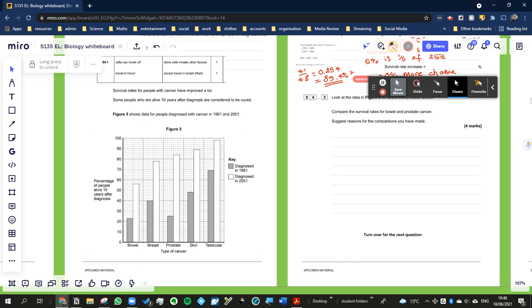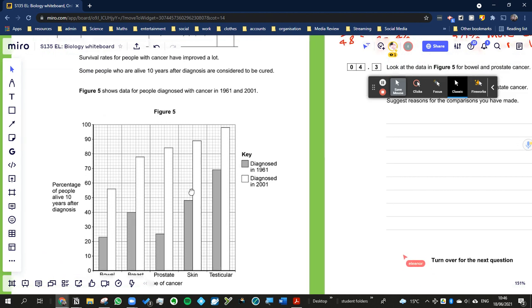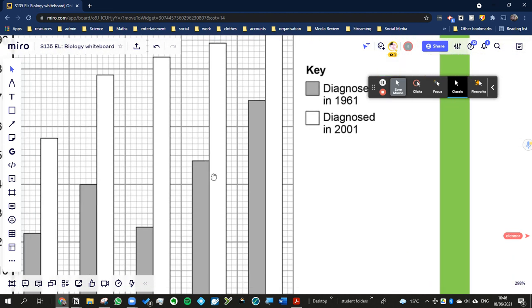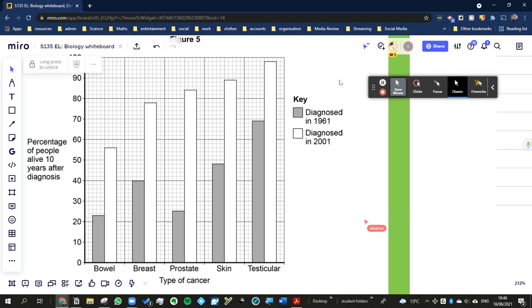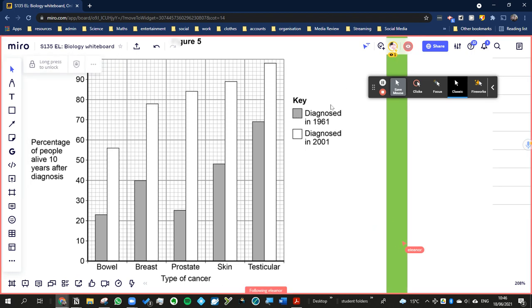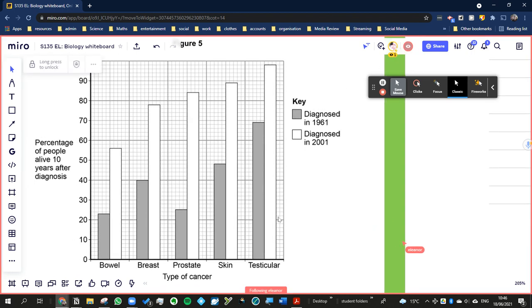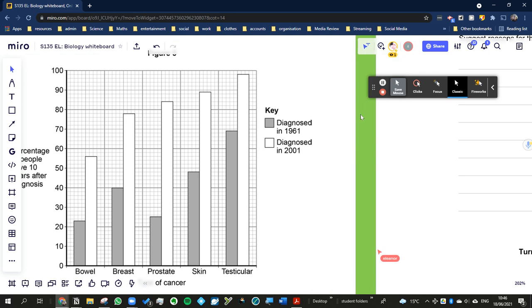Back in 1961, if we just take skin cancer as an example because that's the one in the question, the chance of you surviving after 10 years with skin cancer would be—hang on a second, that's better.